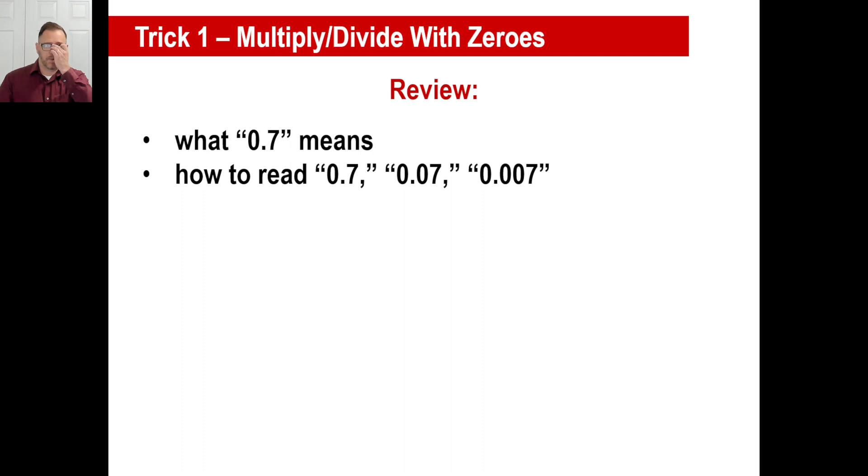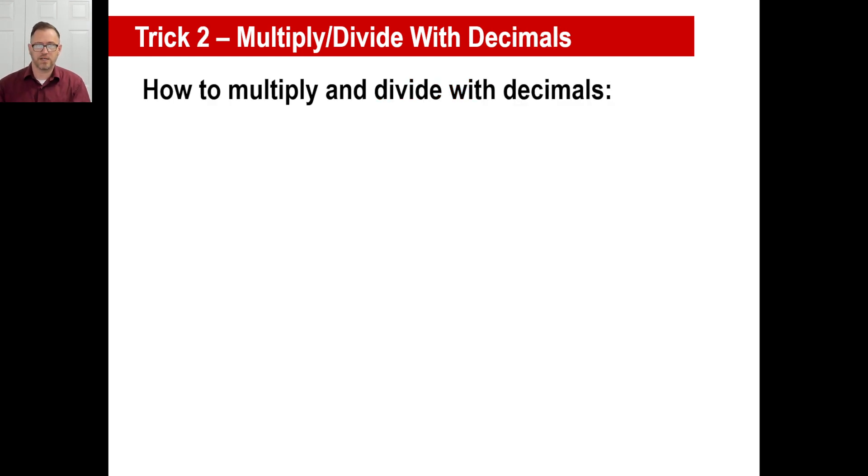Very quickly, let's look back at percentages and decimals and things like that. Zero point seven actually means, if you had to explain this to a little kid, you would say that's seven tenths. That's how to read this: you would say zero point seven is seven tenths. Zero point zero seven, you'd say seven one hundredths. Zero point zero zero seven is seven one thousandths.